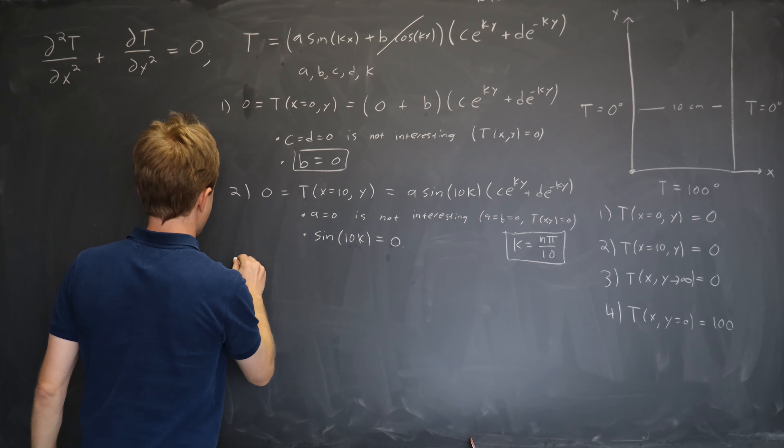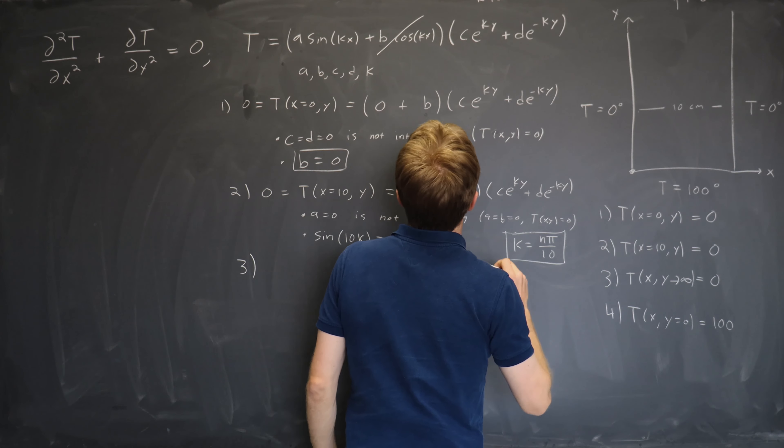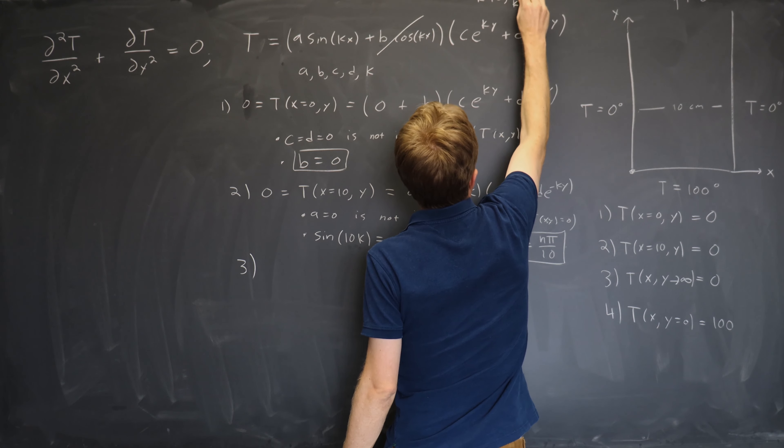On to condition three. So in addition to k not equals zero up here, I can add that we now know k is nπ over 10 where n is an integer.